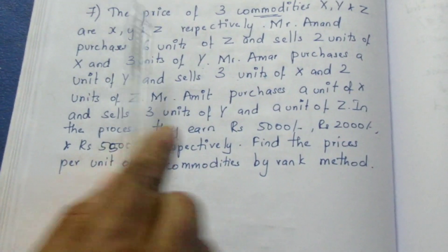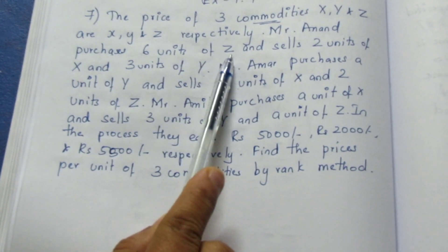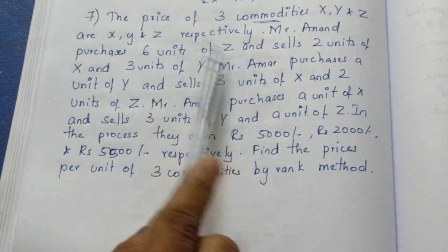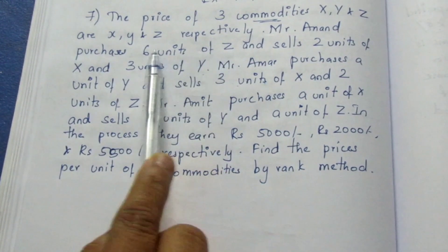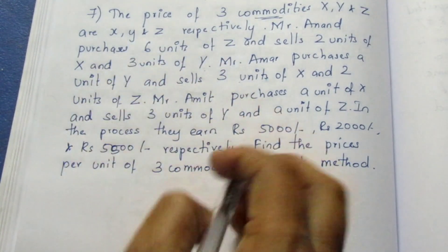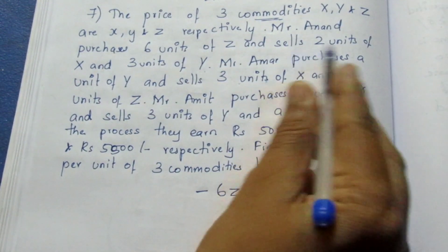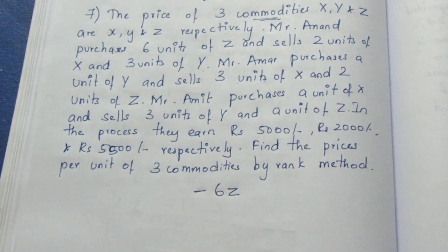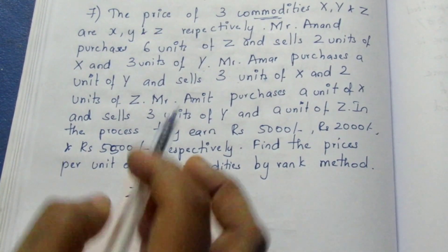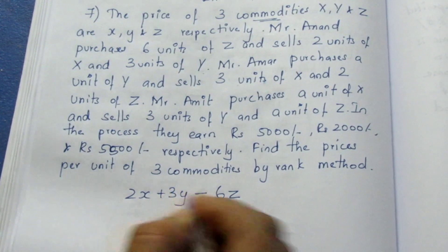Now look. Mr. Anand purchases 6 units of Z, so that is minus 6Z. We multiply it with the price in rupees. Purchase is negative, so minus 6Z. He sells 2 units of X, so 2X is plus. And 3 units of Y — that is why we sell, so plus 3Y.